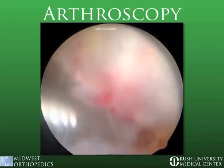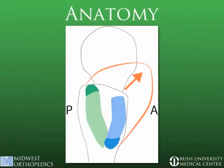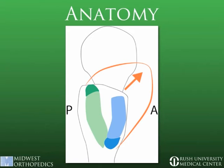As we continue to remove the bursa, one can further appreciate normal anatomy in this patient. Seen here in green, this demonstrates the insertion of the gluteus medius: the light green represents the anterior and middle portions which help initiate abduction, while the dark green is the more posterior portion which stabilizes the hip from heel strike to mid stance. This was delineated by Robertson et al. in Arthroscopy in 2008.